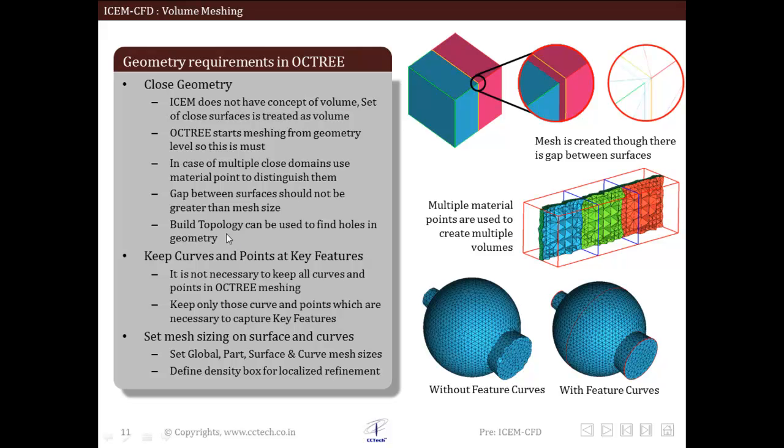Now we will discuss use of curves and points to define geometrical features. As we have already discussed, robust octree algorithm is similar to the patch independent surface meshing algorithm. So unless there exists geometrical feature, mesh will not respect it.